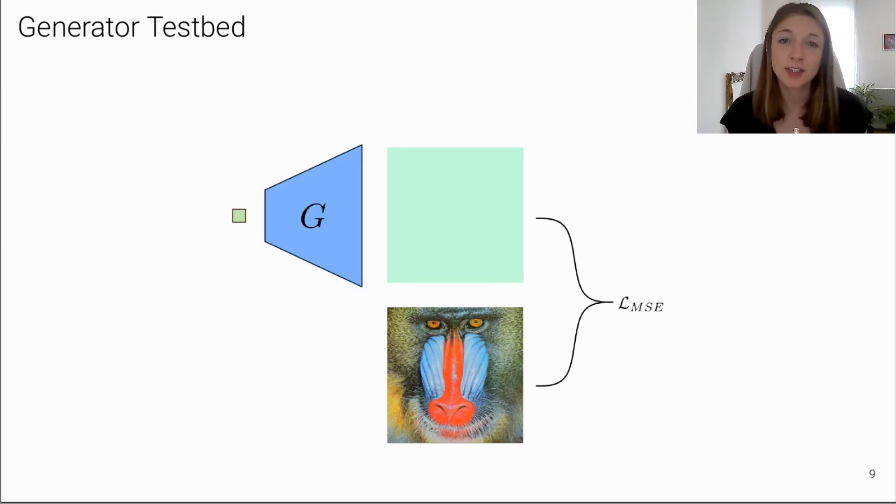We consider a conditional reconstruction task. In particular, we take a small number of images from a dataset and pair them with fixed latent codes. Given a latent code, the generator is optimized to reconstruct the corresponding image with a pixel-wise L2 loss. In the following, we show results for a single image and investigate how different upsampling operations in the generator affect the spectrum of the reconstructed image.